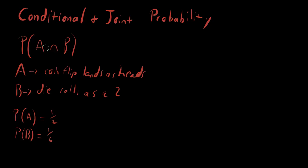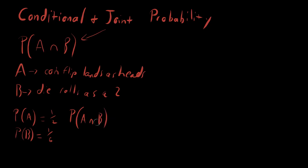Now let's ask: what's the probability of A and B occurring together? This is the joint probability. The probability that you both land heads and roll a two — these are independent events, one doesn't influence the other. So it's just one half times one sixth, which equals one twelfth.